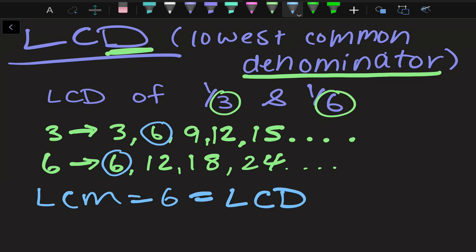Why do we need to find the lowest common denominator? We want to find the LCD so we can add and subtract fractions together, but we also want to find the LCD because it gives us the simplest answer. Three and six also have a common multiple of 12 — we could use 12, but that gives us a fraction we'd have to reduce into a smaller fraction to get the smallest answer.